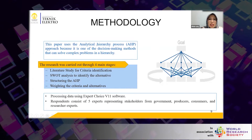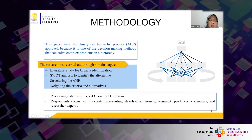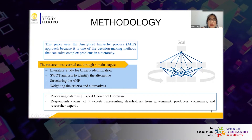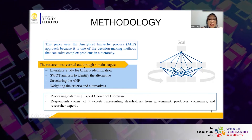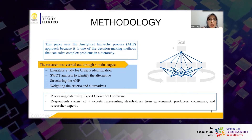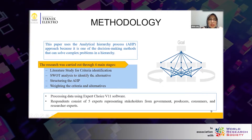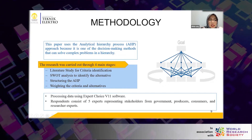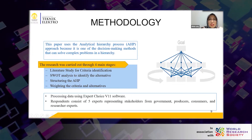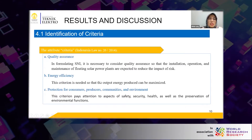This study uses the Analytical Hierarchy Process, or AHP approach, because it is one of the decision-making methods that can solve complex problems in a hierarchy. The research was carried out through main stages: first, a literature study for criteria identification; second, identifying the alternative attributes based on analysis; third, compiling the AHP structure consisting of the objective, criteria, and alternatives; and fourth, rating the criteria and alternatives using a pairwise comparison matrix filled by respondents. For processing data, we used Expert Choice V11 software. Respondents consisted of five experts representing government, producers, and researcher experts.